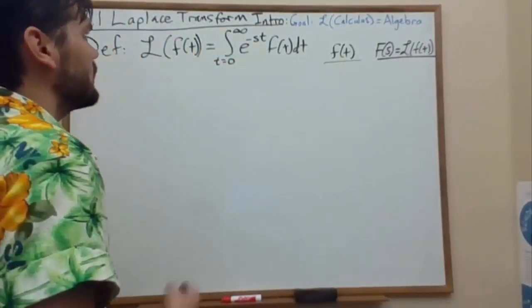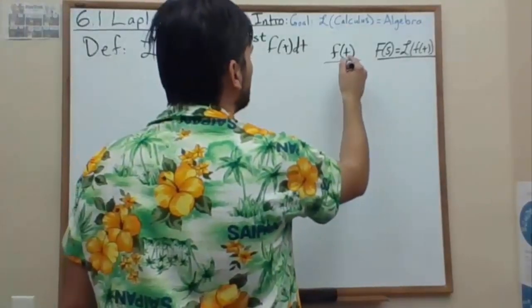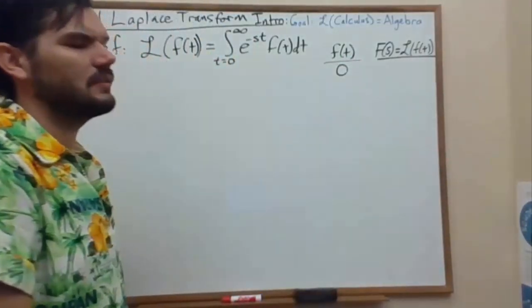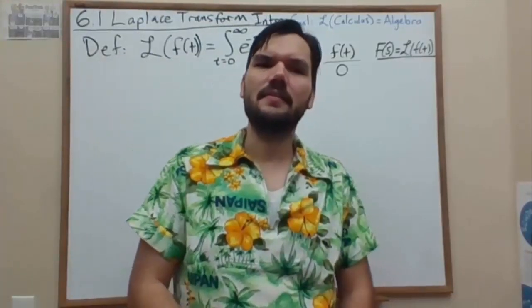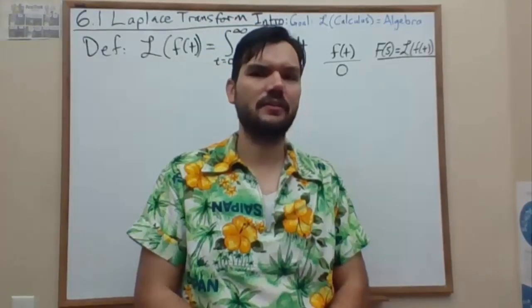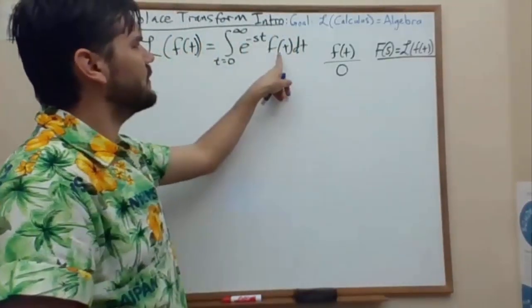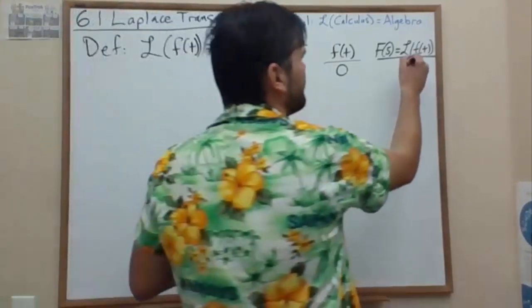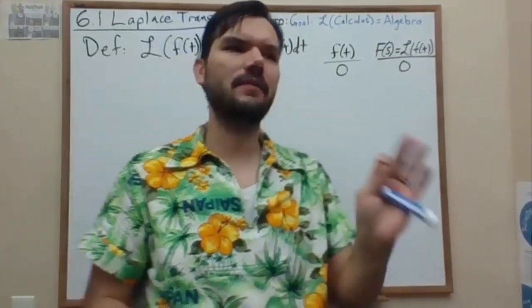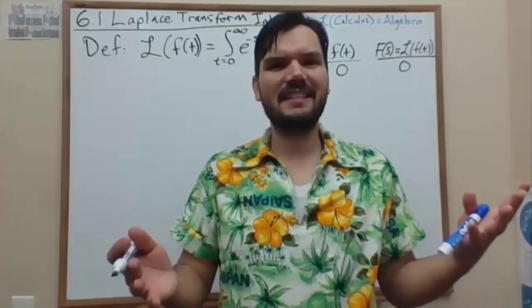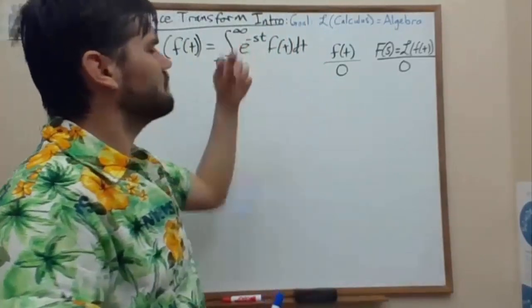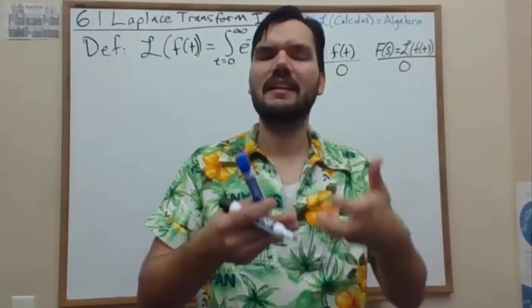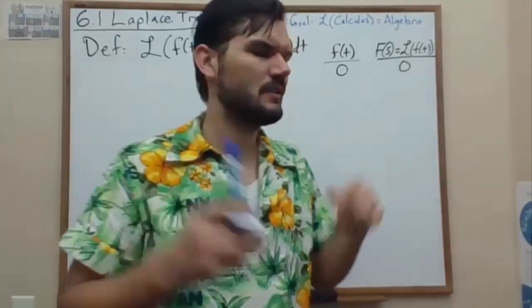For a transformation to be linear, the value zero must transform to zero — that is one of the requirements of a linear transformation. If we plug in zero, multiply by the exponential, we do get zero, and integrating that from zero to infinity confirms it. The next step on it being linear is simply that it's an integral, and integrals are linear because you can take the integral of a sum and break it into a sum of integrals.